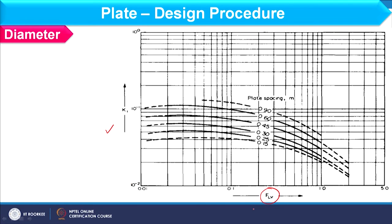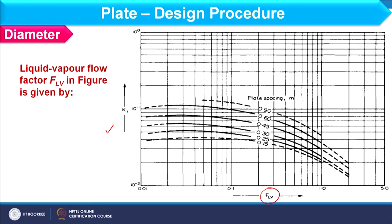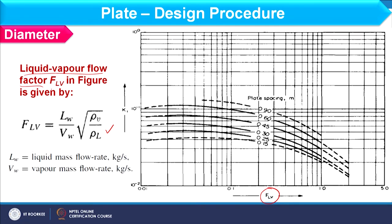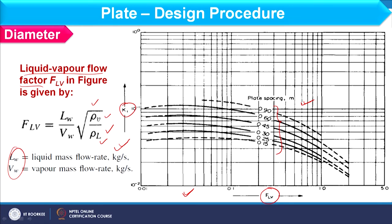To find the K1 factor, it depends on the FLV value — the liquid-vapour flow factor. We calculate its value by the expression: FLV = (Lw / Vw) × √(ρV / ρL), where Vw and Lw are the vapour and liquid mass flow rates given by the process conditions. When using this graph, if I have the value of FLV, I fix the plate spacing and accordingly find out the value of K1.